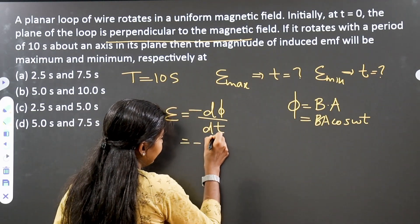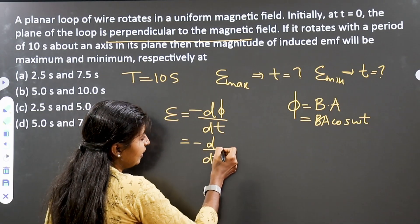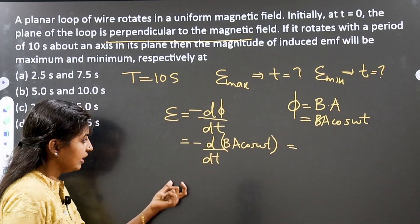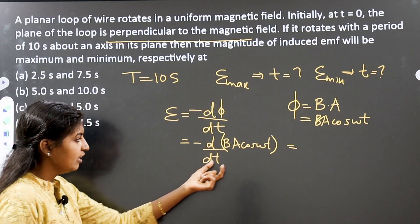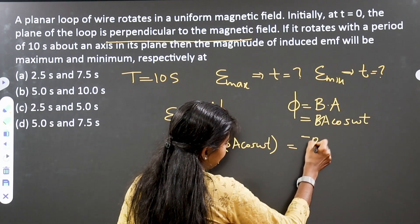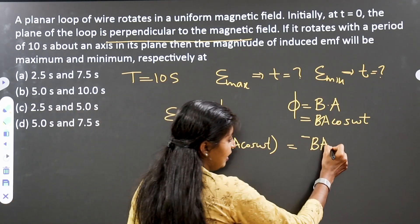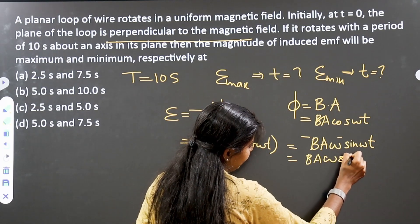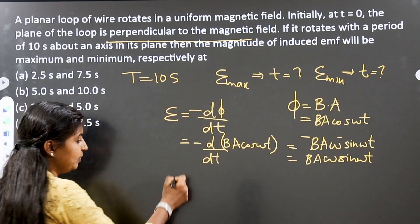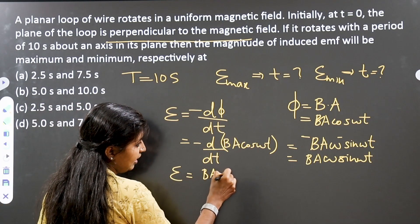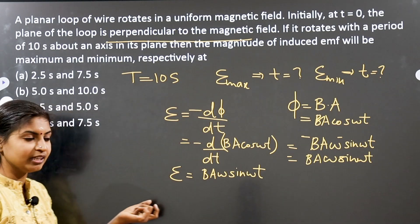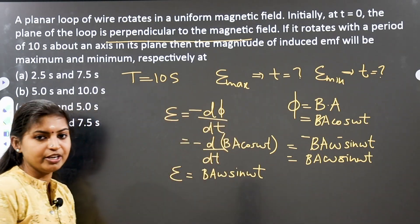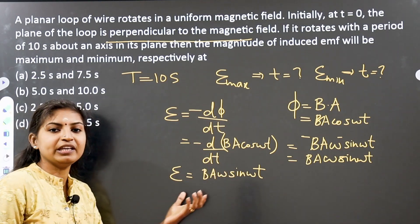On substituting this equation, we have: EMF equals minus d/dt of BA·cos(ωt). Differentiating with respect to t, we get minus BA times minus ω·sin(ωt), which gives us BA·ω·sin(ωt). So directly, the induced EMF equals BA·ω·sin(ωt).